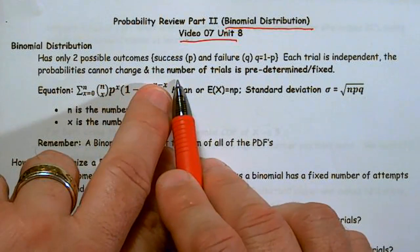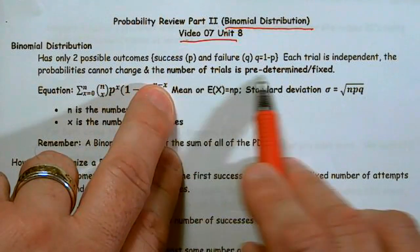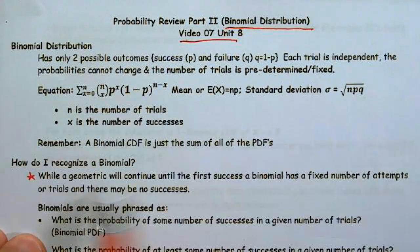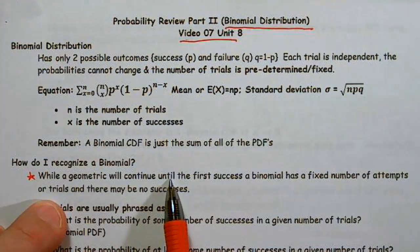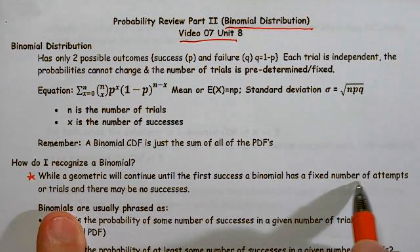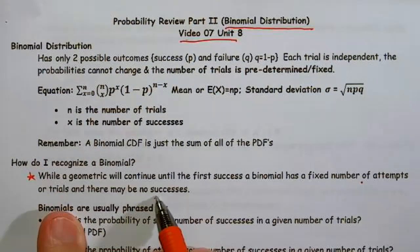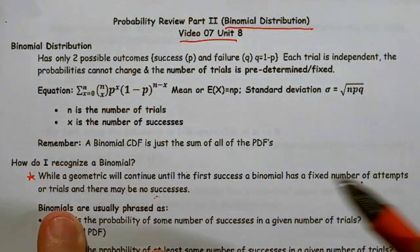But the difference is the number of trials is predetermined or fixed. When we were working with the geometric, we continued until the first success. With the binomial, we are going to have a fixed number of attempts or trials. We may have zero successes, whereas with the geometric, you're continuing until the first.